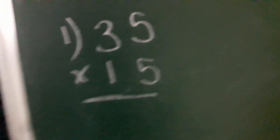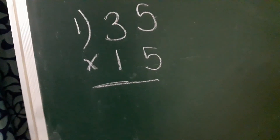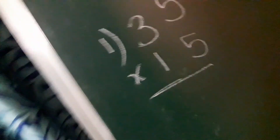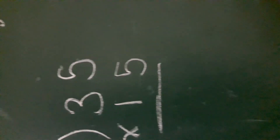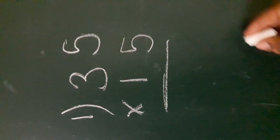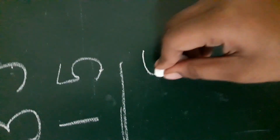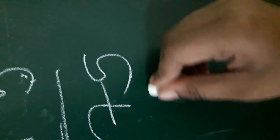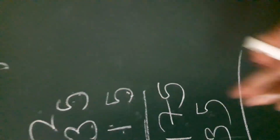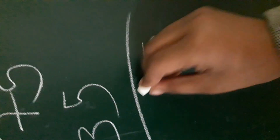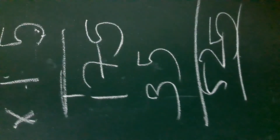Generally, we will try it. 35 into 15 — 35 is 25. 3, 5 is 15 plus 2 is 17. 5, 1 is 5. 3, 1 is 3. So: 5, 2, 1, 5 — the answer is 525.